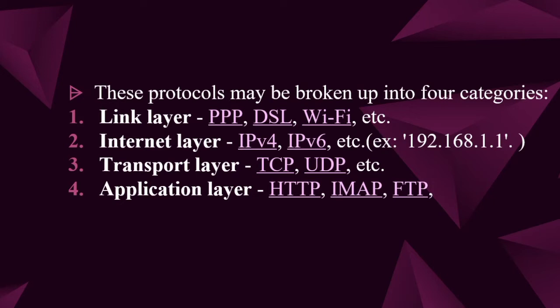IPv6 has a 128-bit alphanumeric address. The transport layer includes TCP and UDP. TCP is Transmission Control Protocol — used for reliable long-distance data transfer. UDP is User Datagram Protocol. If you miss a packet, it will be lost — that is a drawback of UDP.